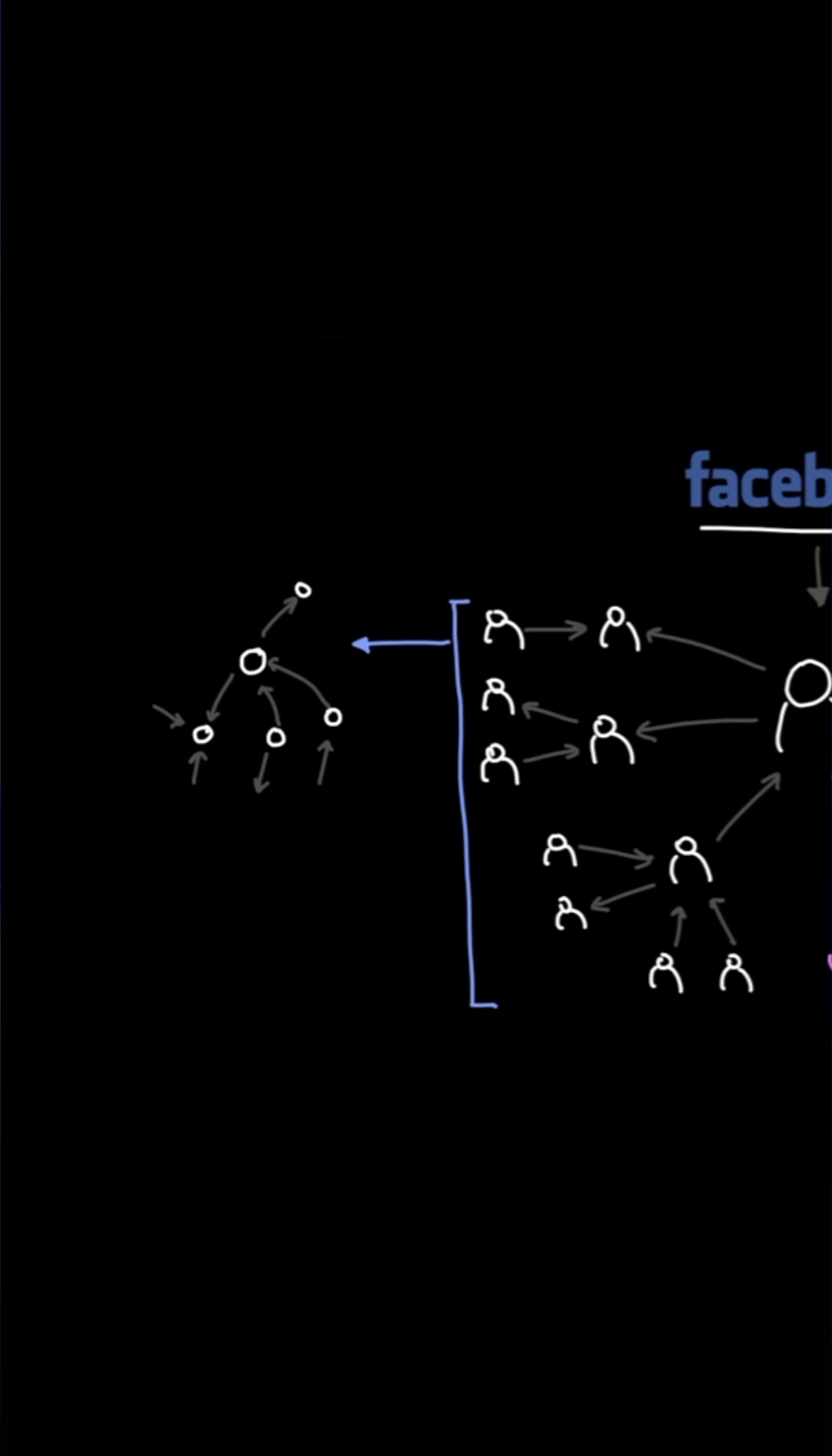Knowledge graph stores information in nodes and edges, where people become nodes and the connection becomes the edge.